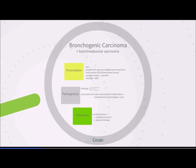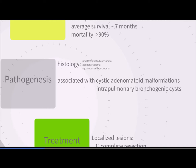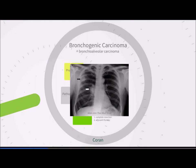Bronchogenic carcinoma, also known as bronchioalveolar carcinoma, is quite rare but represents the second most common malignant primary lung lesion. It is associated with cystic adenomatoid malformations and intrapulmonary bronchogenic cysts. Most are undifferentiated carcinoma or adenocarcinoma; squamous cell carcinoma is rare. The mortality rate exceeds 90%, with most children presenting with disseminated disease and only a 7-month average survival. Treatment of localized lesions involves resection followed by adjuvant therapy. On the CT shown, bronchogenic carcinoma tends to be peripheral, impacting the upper lobes, with right hilar adenopathy also visible.